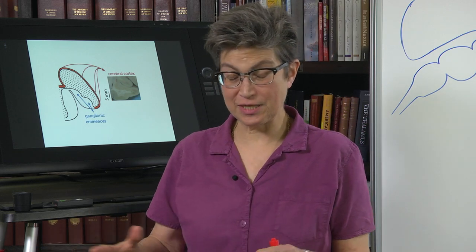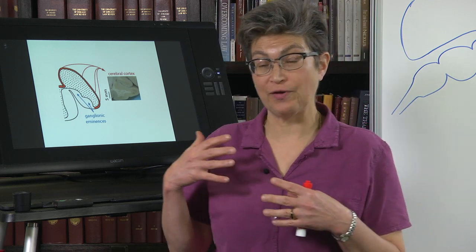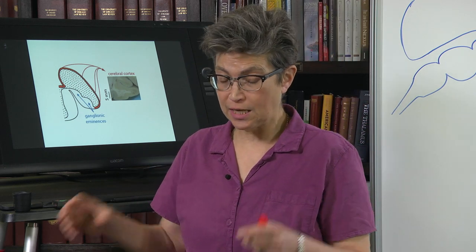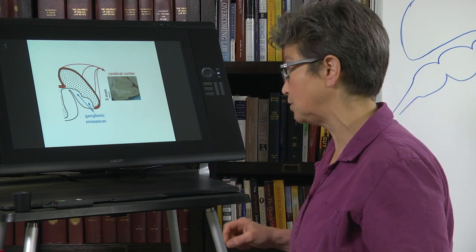So what we saw before is that the dorsal telencephalon has expanded because it is the part of the telencephalon that develops into the cerebral cortex. The ventral telencephalon becomes subcortical structures.